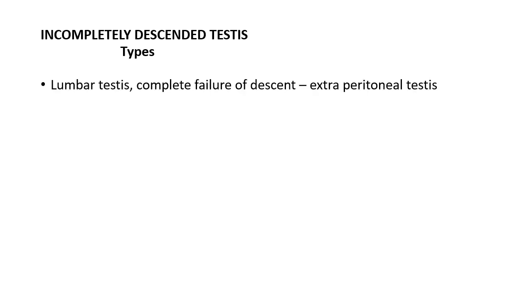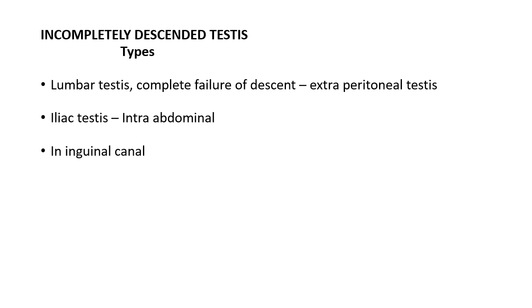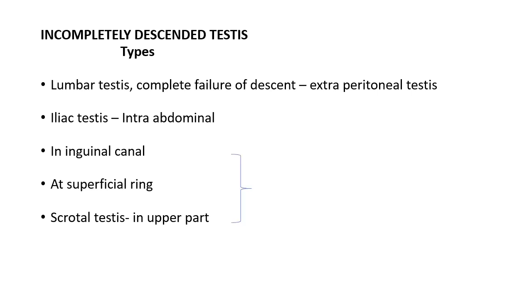The types of incompletely descended testes depend on the site where testicular descent is arrested. Lumbar testes represent complete failure of descent — these are intra-abdominal. They can also lie at the deep inguinal ring, within the inguinal canal, at the superficial ring, or as a scrotal testis at the root of the scrotum. Before labeling a testis as incompletely descended for those situated from the inguinal canal downward, always rule out a retracted testis.